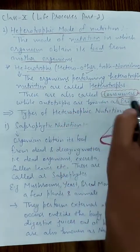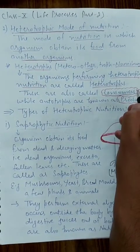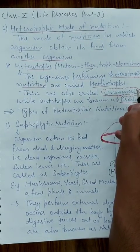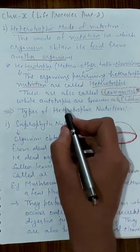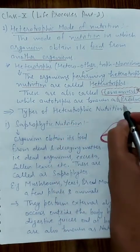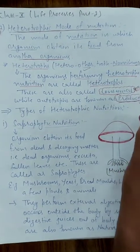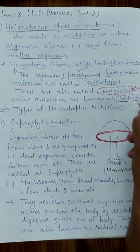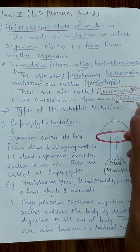Heterotrophs are also called consumers, because they are consuming other organisms for the sake of obtaining nutrition. While autotrophs are known as producers because they are able to produce food material themselves.